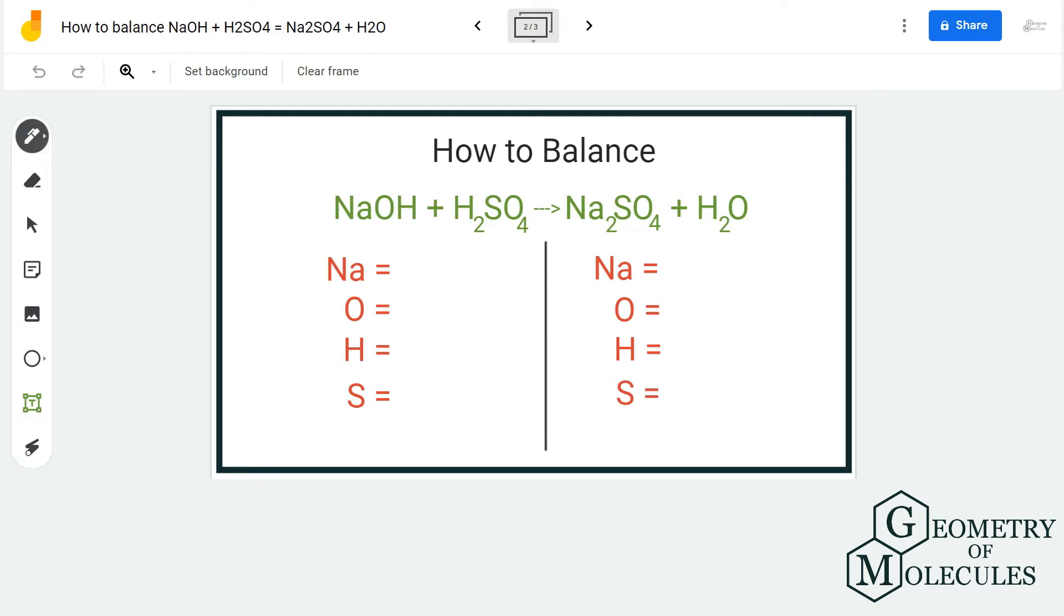Here for reactant side we have one atom of sodium. For oxygen we have 1 plus 4, which makes it 5. Hydrogen we have 1 plus 2 here, so it makes it 3, and we only have one atom of sulfur.